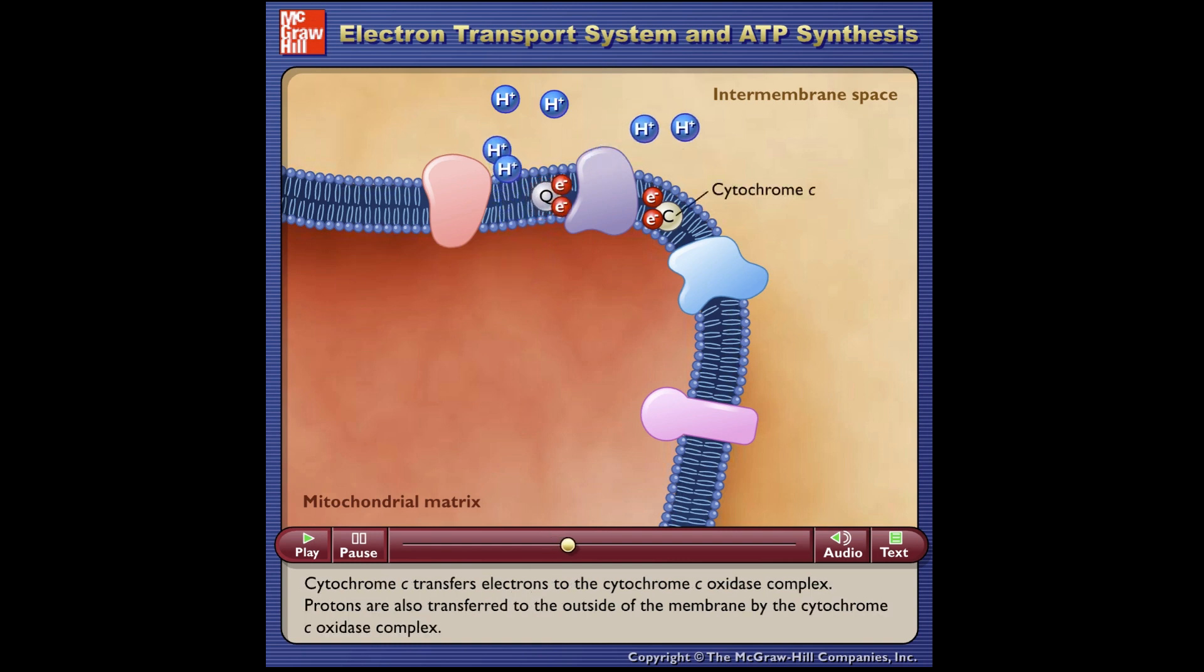Cytochrome C transfers electrons to the cytochrome C oxidase complex. Protons are also transferred to the outside of the membrane by the cytochrome C oxidase complex.